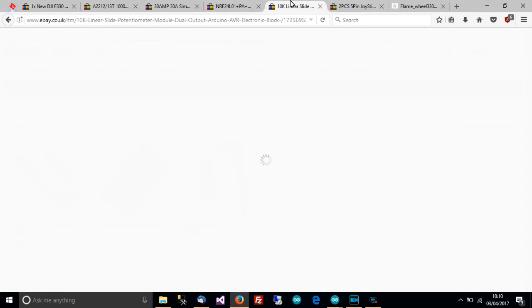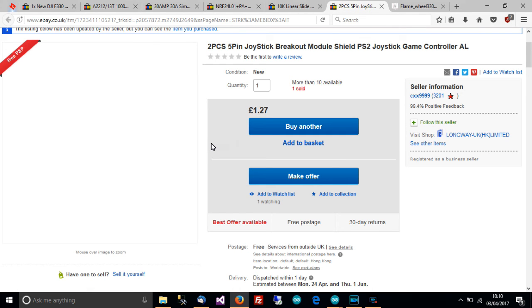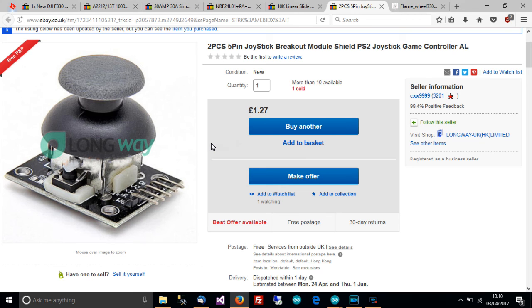And then for the transmitter. I was thinking of making my own transmitter which I may or may not do now. But anyway, I've got this slide potentiometer, £1.26 from CXX9999. And this will control the speed probably. And I've got two pieces of joystick which will control the forwards, backwards and left and right maneuvers. And also I may need one for turning on the spot.